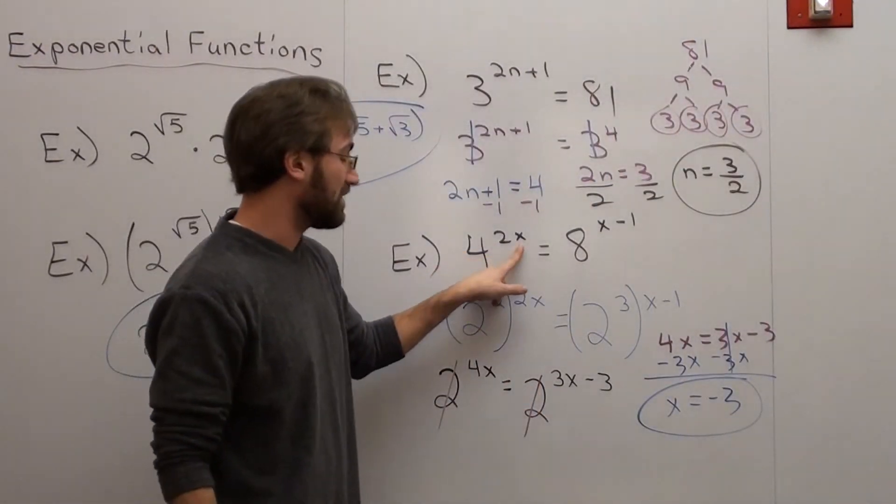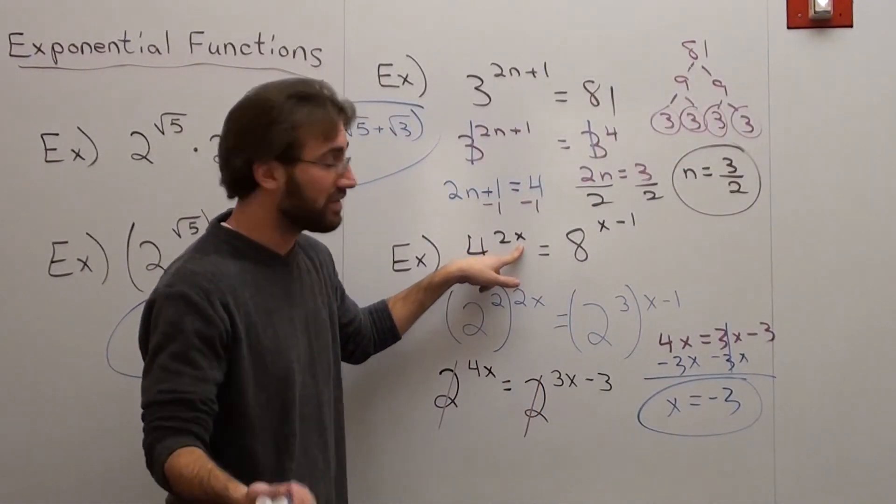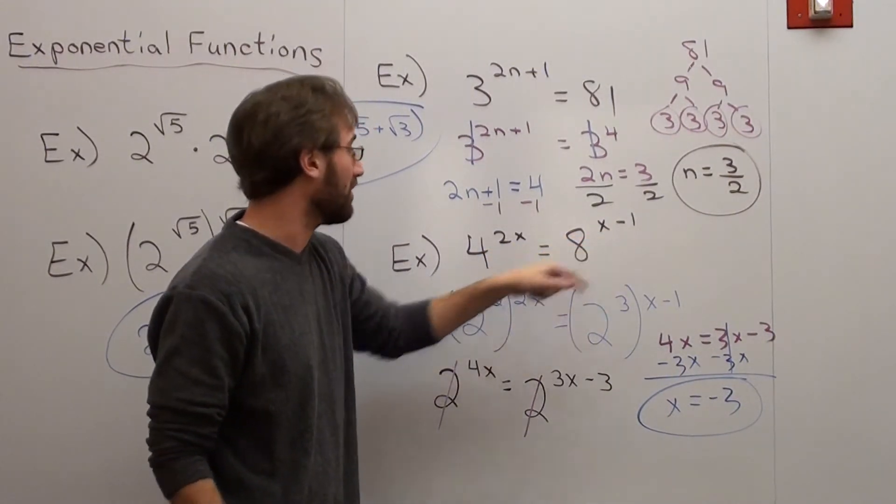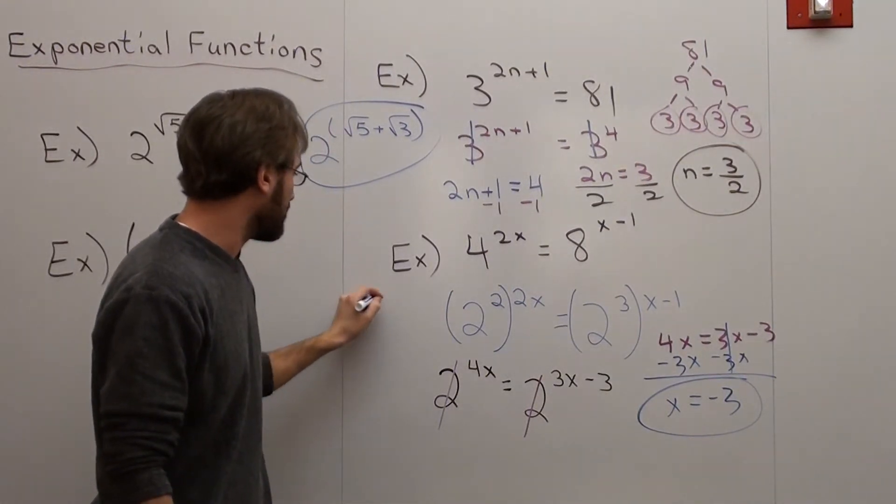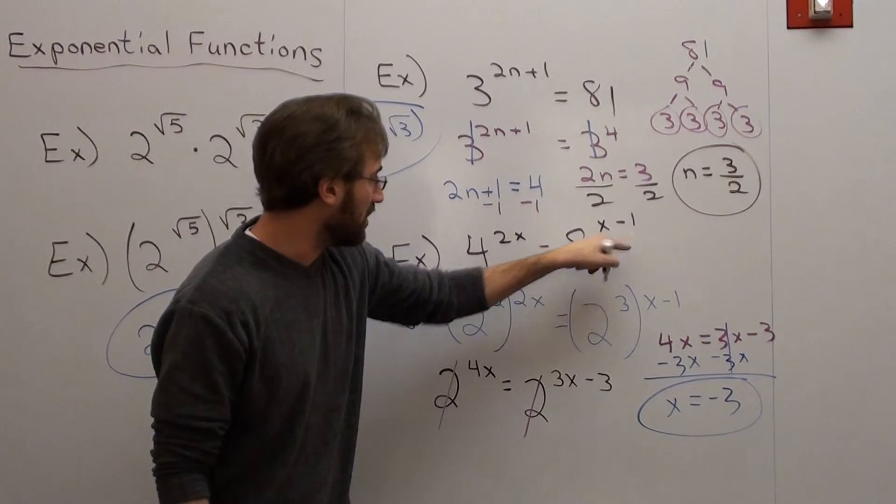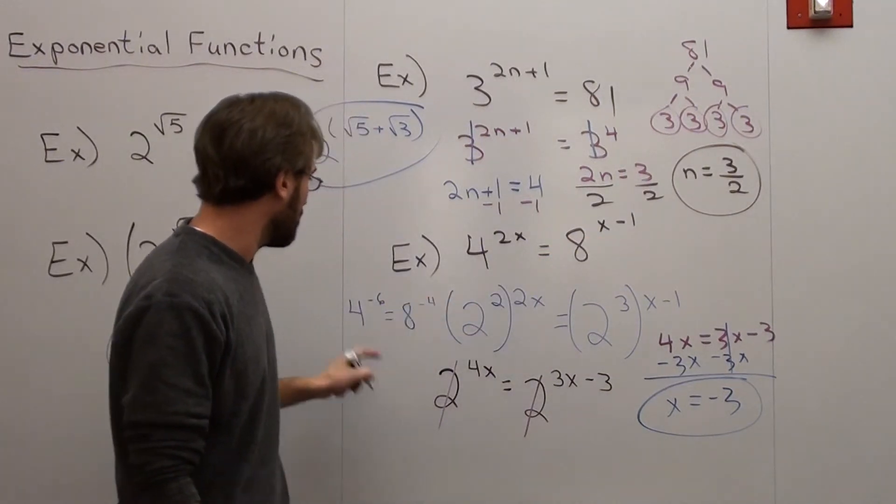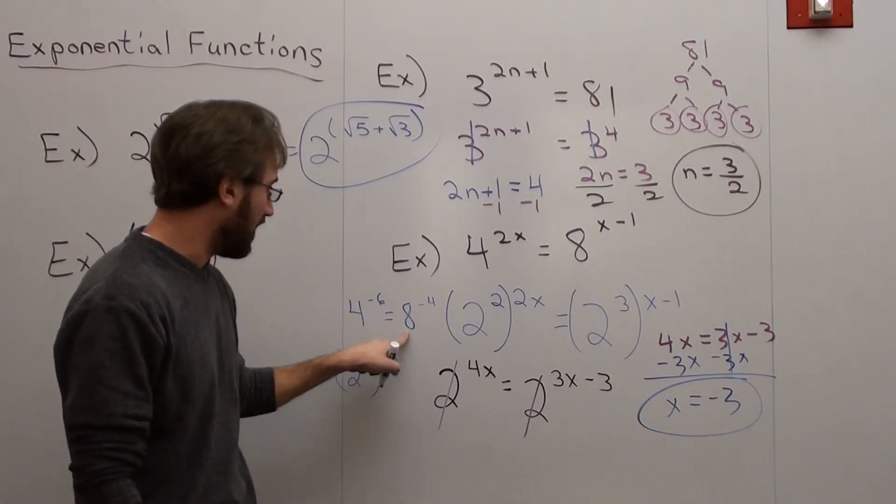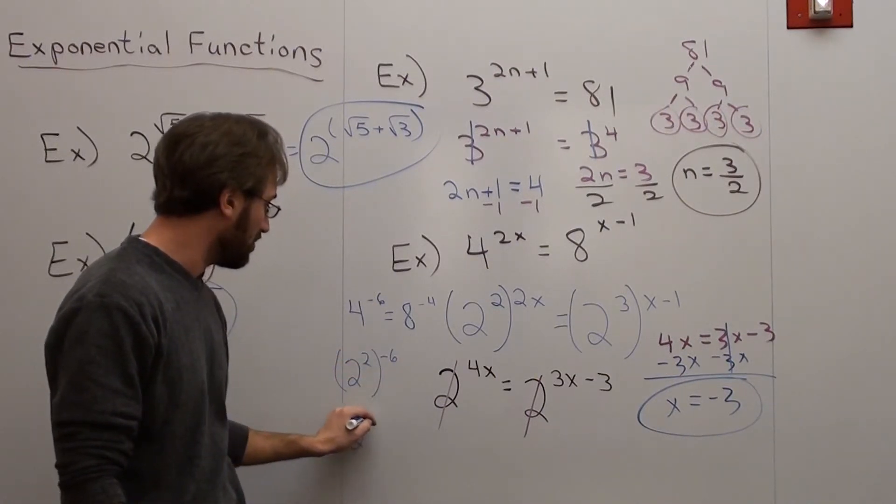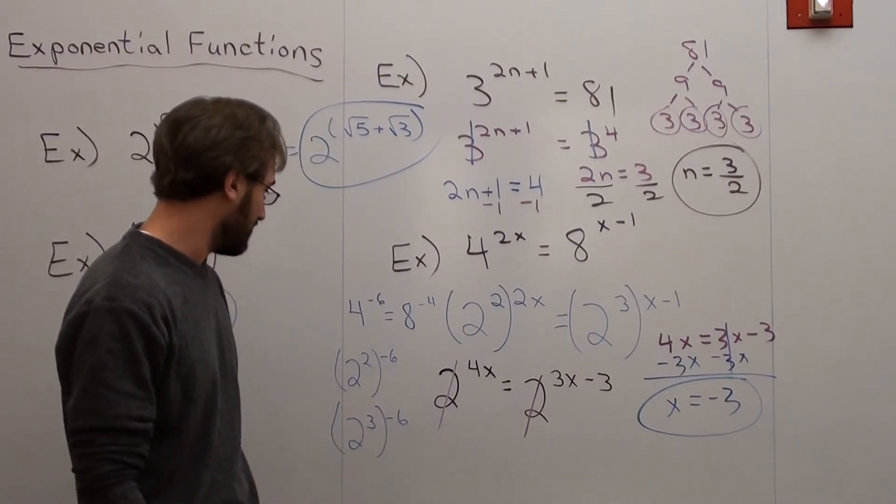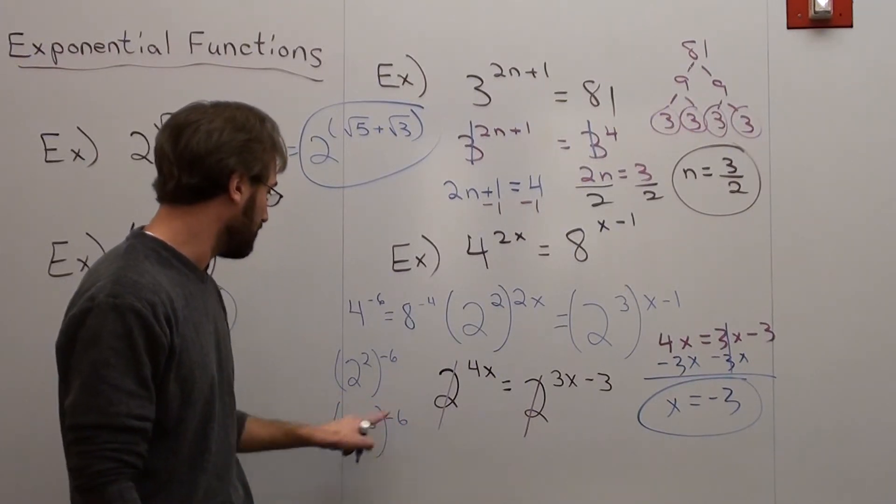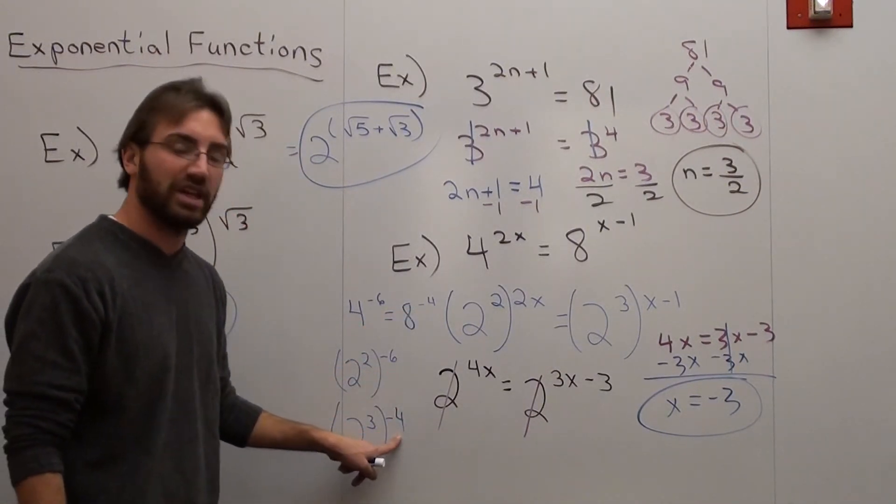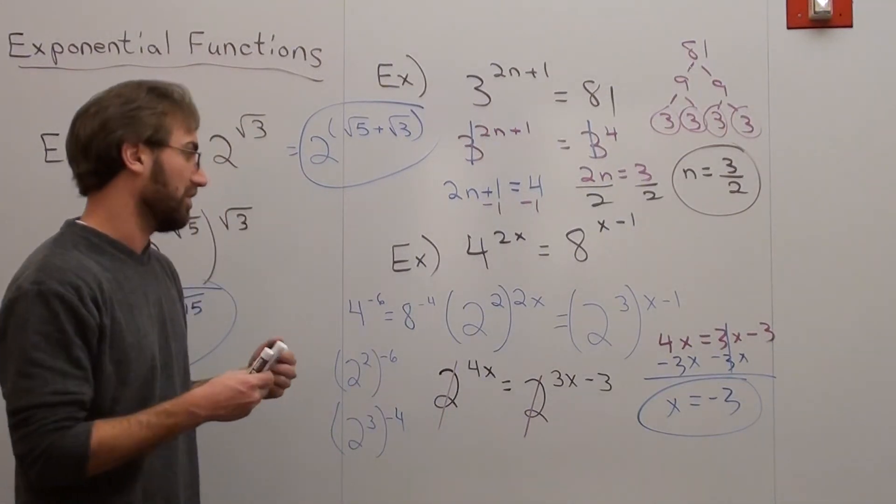Now that is in fact correct. 2 times negative 3 is negative 6. Negative 3 minus 1 is negative 4. So that's 4 to the negative 6 equals 8 to the negative 4, which is the same thing as 2 to the second to the negative 6. And 8 is the same thing as 2 to the third of negative 4. And 2 to the negative 6 is negative 12. 3 to the negative 4th is 12. So they're both equivalent. It's quite cool.